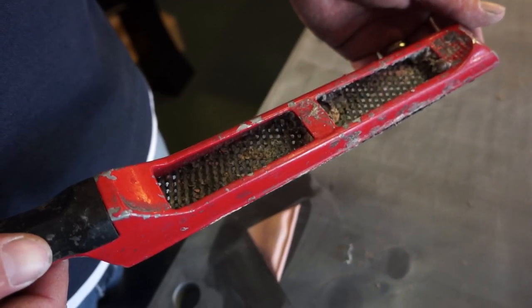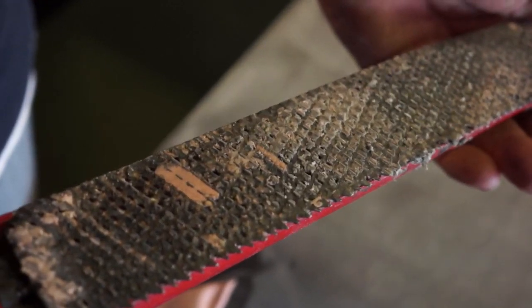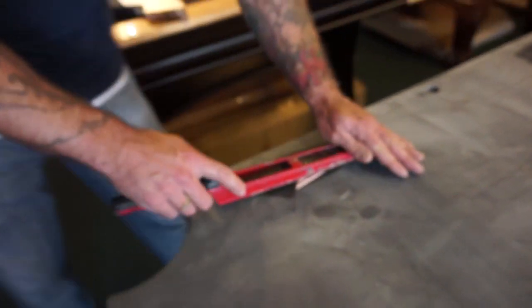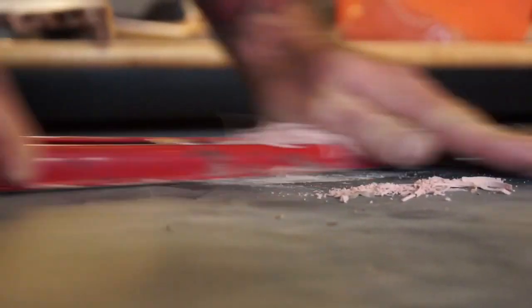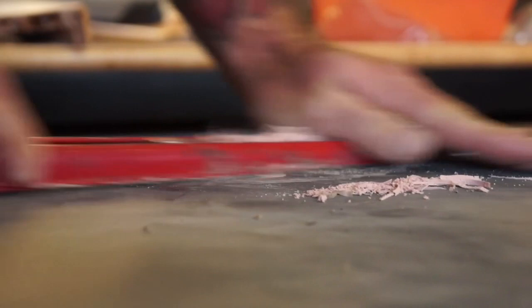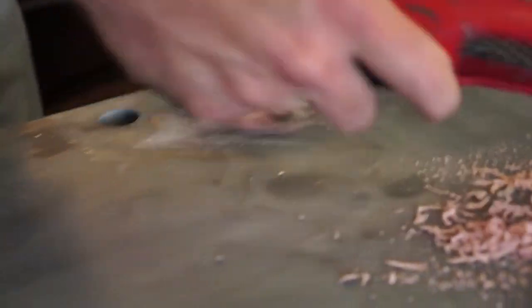After about five minutes, the bondo has dried and our installer uses a shaver to remove the excess bondo from the holes. This, once again, is a crucial step because the bondo must only be removed to exactly the point where the slate levels out. Any under or over shaving will result in an uneven playing surface.